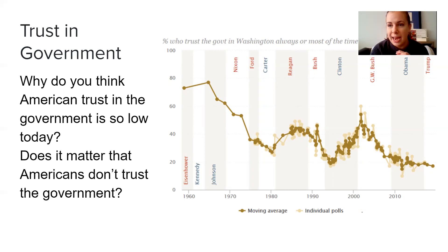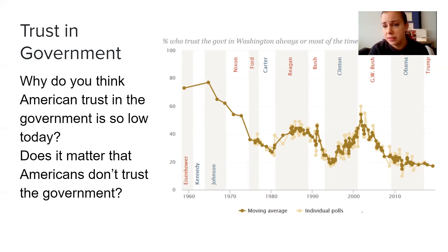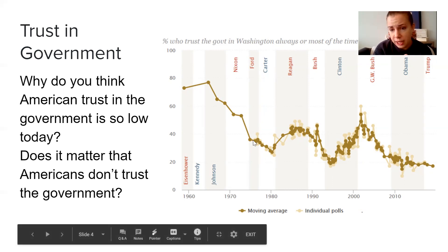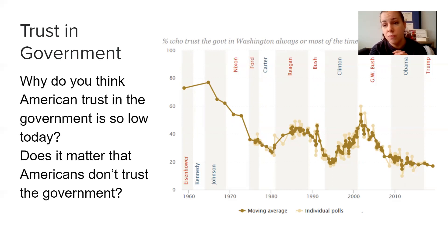I'm going to give you guys a second to pause this video and ask yourself these questions: Why do you think American trust in the government is so low today, especially considering the Trump presidency? And does it matter that Watergate has this effect on the American public's trust in the government? We can clearly see that Watergate is where it starts and it almost never fully recovers, except for little short bursts. That is a consequence of Watergate — Americans stopped trusting the government. Pause this video and take two minutes to silently consider these questions; it will be very helpful for the exit ticket in today's classwork.